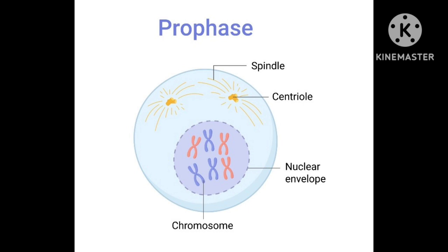In mid prophase, the chromatin network breaks up to form chromosomes having a pair of threads called chromatids. The spindle fibers also start to form outside the nucleus. Then begins late prophase, whereby the chromosomes move to the periphery — they are shortened and thickened. The centrioles move apart to the opposite poles of the cell, and then prophase ends with the disappearing of the nucleolus and the nuclear membrane.